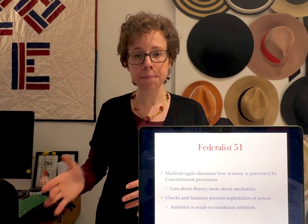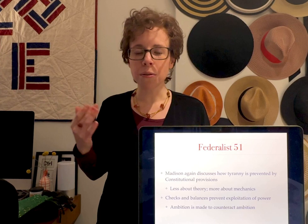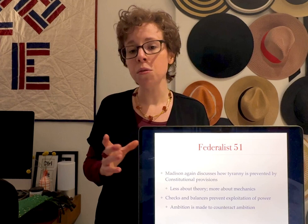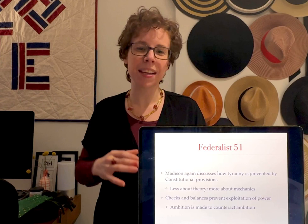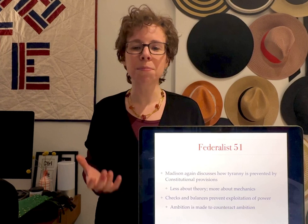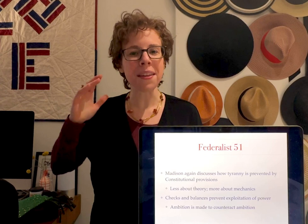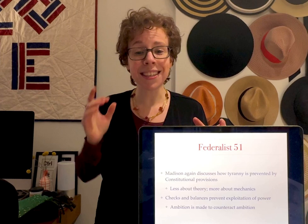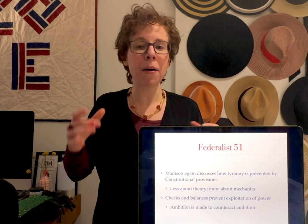This idea of balancing powers and counteracting forces is animated by an underlying principle similar to Adam Smith's discussion of competition. Each branch is in competition with the others — they're competing for power, for access to the same power. As Madison says, they're ambitious. Each branch wants more power, and ambition will check ambition. Congress is going to want to seize more power, but so is the president, so each will stop the other from taking too much.